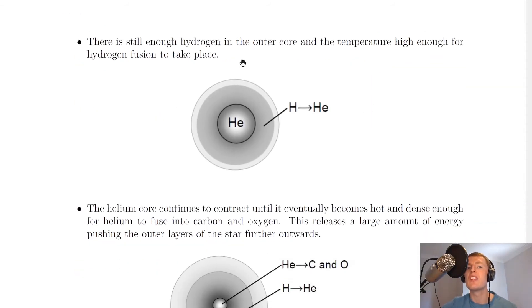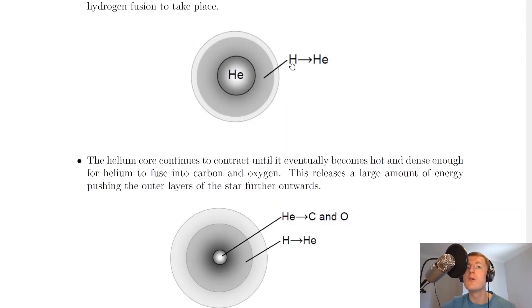There is still enough hydrogen in the outer core and the temperature high enough for hydrogen fusion to take place. So in the outer core, we still get hydrogen being converted into helium.